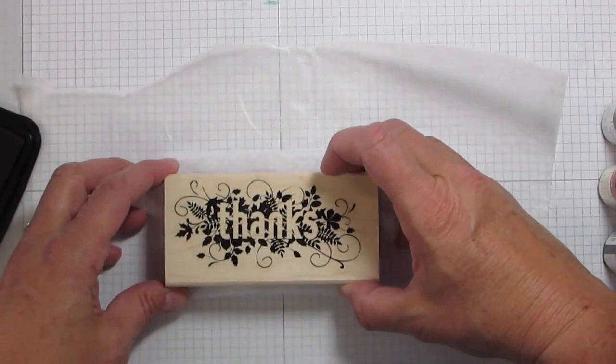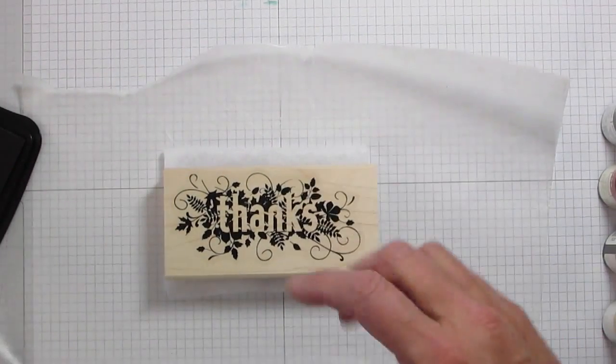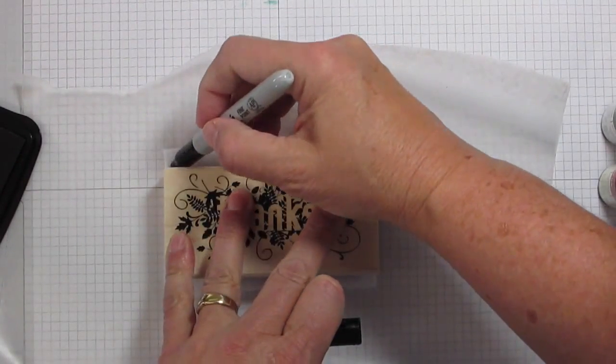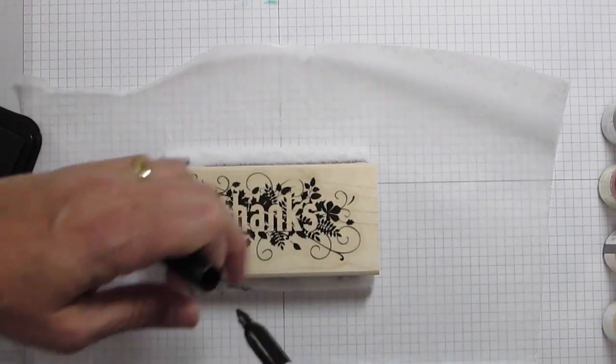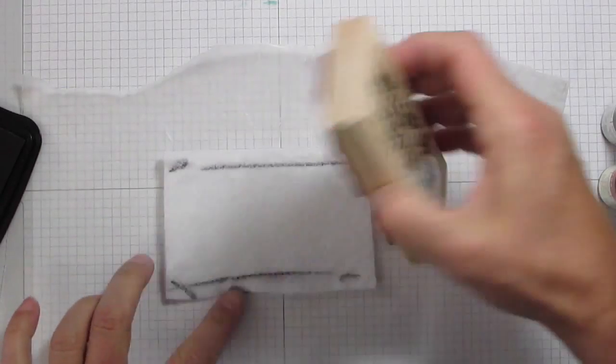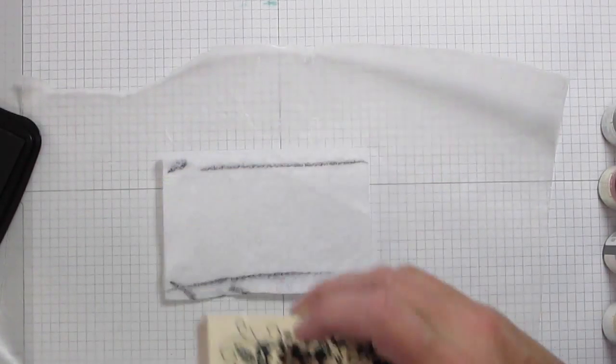So what I'm going to do to begin with is take this stamp and I'm just going to kind of line it up there. And what I'm doing is I'm just taking a Sharpie and I'm drawing a line. Make sure you draw the line onto the felt. That's just going to give me an idea of placement for my stamp.